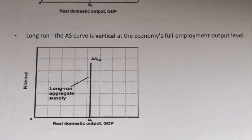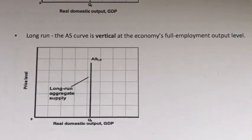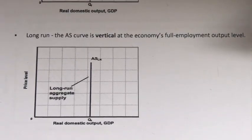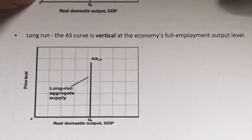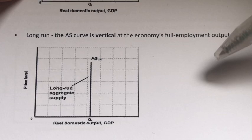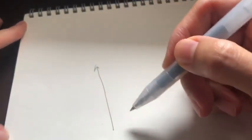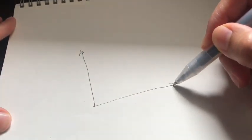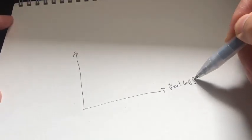Now let's take a look at the third time horizon: the long run. The long run is a period of time where both input prices and output prices are flexible. The aggregate supply curve in the long run is vertical at the economy's full employment output level. To show how the vertical aggregate supply curve came about, we begin with a basic XY plane — real GDP or real output on the horizontal axis and price level on the vertical axis.